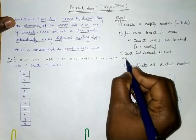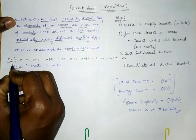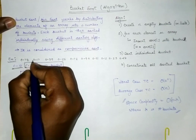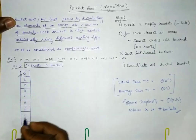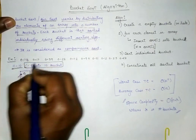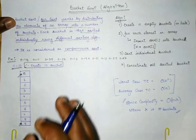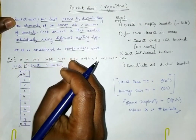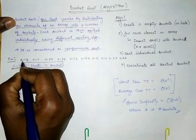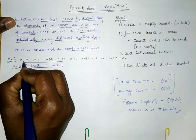Here we have 10 elements in the array, so the value of n is 10. That means we have to create 10 buckets, numbered 0 to 9. To store each element into a bucket, we multiply that element by the value of n. For example, 0.78 multiplied by 10 gives 7.8, so it will go into the 7th bucket.